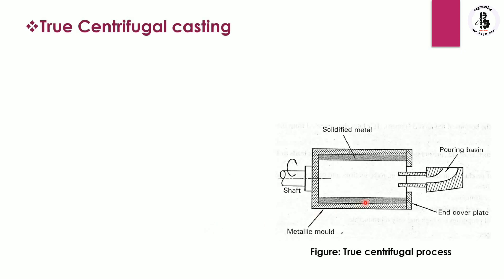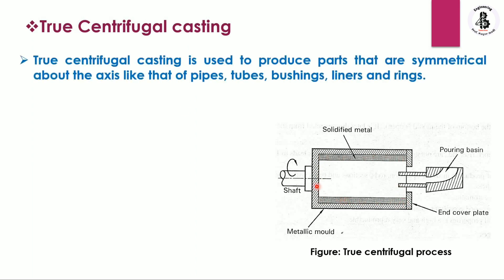In the true centrifugal casting process, there is a shaft and the metallic mold is connected to it. By the application of the ladle and a pouring basin, the molten metal enters into the hollow mold. By the rotation of the shaft, the entire metallic mold also rotates. Due to centrifugal force, the molten metal solidifies after some time, from both ends. True centrifugal casting is used to produce parts symmetrical about an axis, such as pipes, tubes, bushings, liners, and rings.